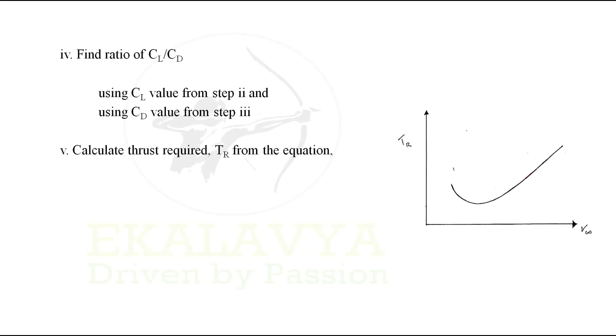The fifth step will be to calculate the thrust required TR from the equation: thrust required is equal to weight divided by Cl by Cd.